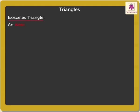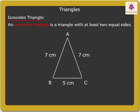Isosceles Triangle: An isosceles triangle is a triangle with at least two equal sides. Look at the triangle ABC. The lengths of its two sides, AB and CA, are 7 cm each. Thus, we say triangle ABC is an isosceles triangle.